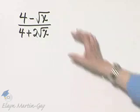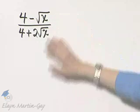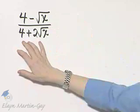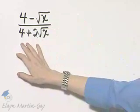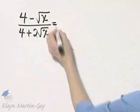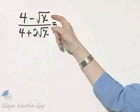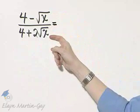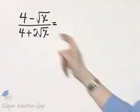We want to rationalize the denominator of this expression. Notice the denominator — we can think of this as a binomial, and so to rationalize this denominator, we'll multiply numerator and denominator by the conjugate of the denominator.